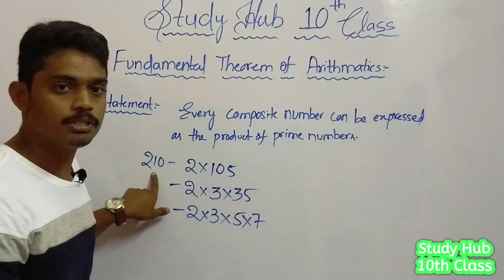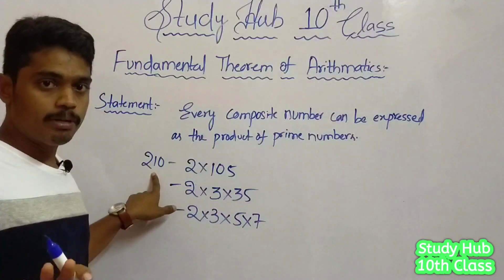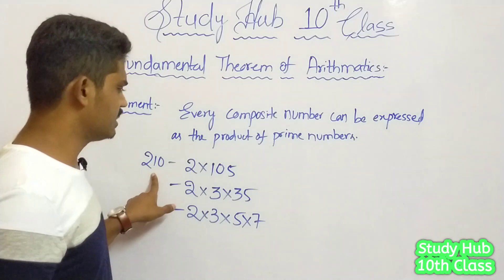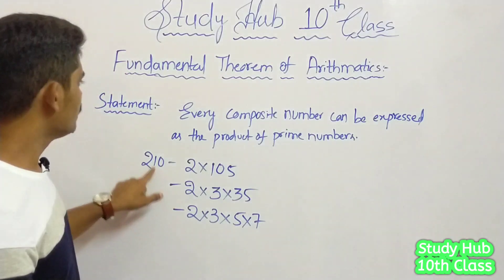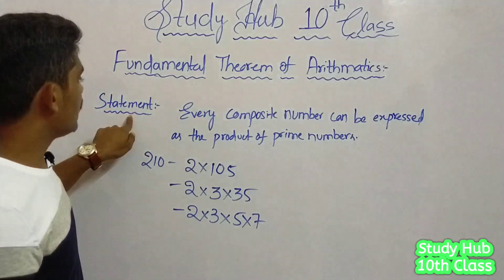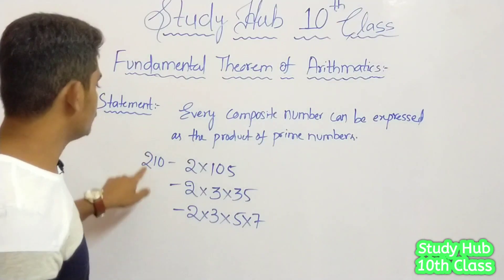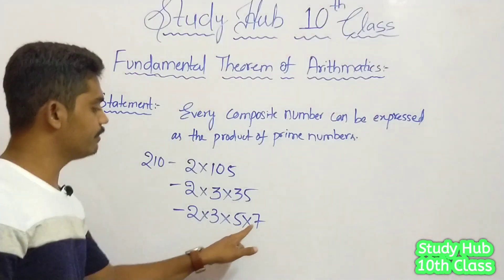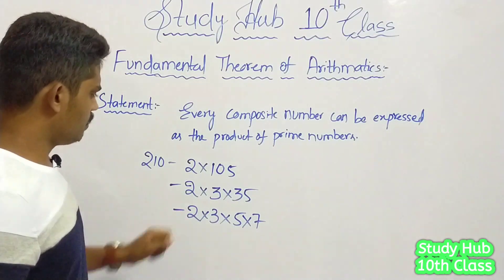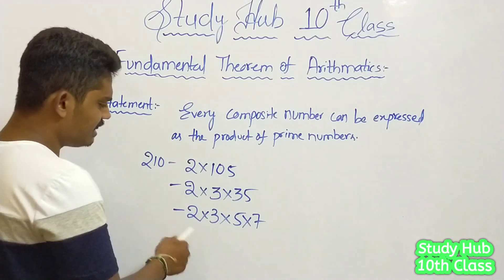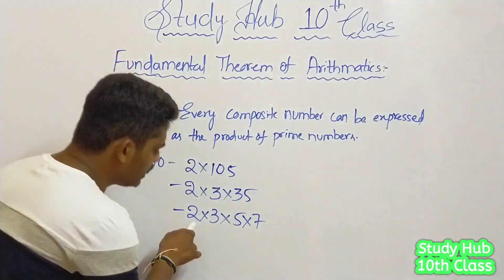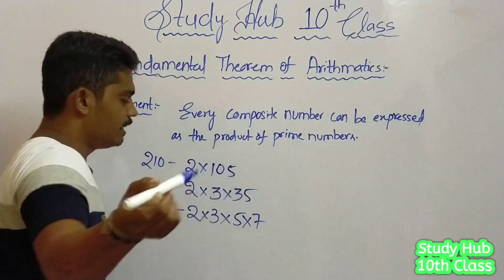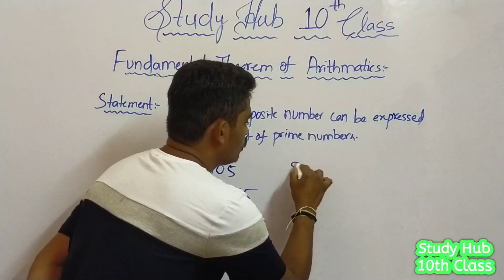That every composite number — I will explain what is a composite number, what is a prime number, how we are factorizing. But just for now, try to understand the statement. 210 is expressed as 2 into 3 into 5 into 7. Is there any rule that we need to write it as 2, 3, 5, 7? Let us check it in a different way.